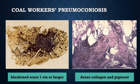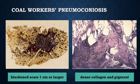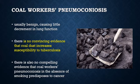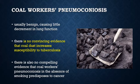Complicated coal worker's pneumoconiosis occurs on a background of simple disease and generally requires many years to develop. It is characterized by intensely blackened scars 1 cm or larger. Microscopically, the lesions consist of dense collagen and pigment. The center of the lesion is often necrotic, most likely due to ischemia, with presence of anthracotic scars and fibrosis. Coal worker's pneumoconiosis is usually benign, causing little decrement in lung function. Unlike silicosis, there is no convincing evidence that coal dust increases susceptibility to tuberculosis. However, once progressive massive fibrosis develops, it may continue to worsen even if further exposure to dust is prevented. There is also no compelling evidence that coal worker's pneumoconiosis, in the absence of smoking, predisposes to cancer.